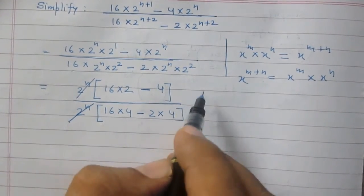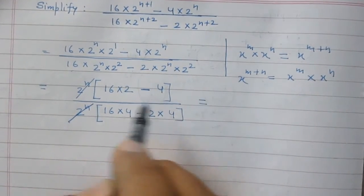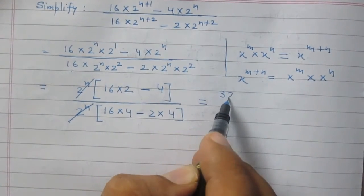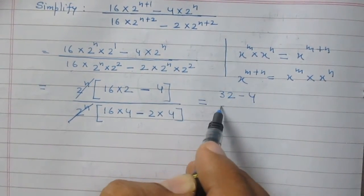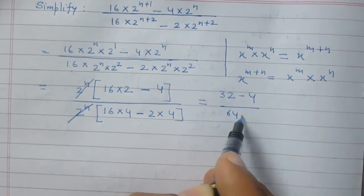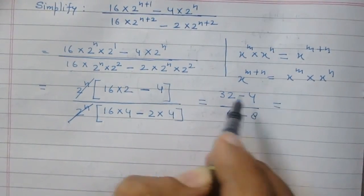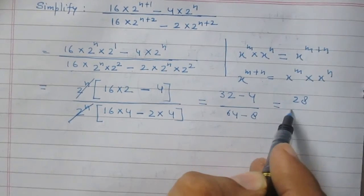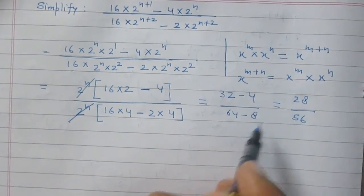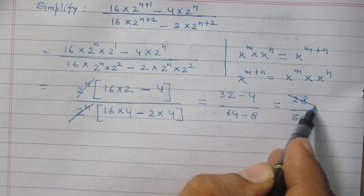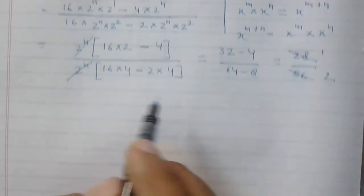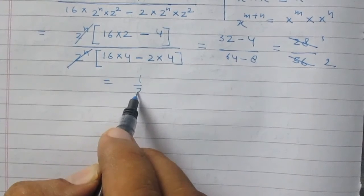In the numerator: 16 multiplied by 2 is 32, then minus 4, giving 28. In the denominator: 16 multiplied by 4 is 64, then minus 8, giving 56. We get 28 divided by 56, and the result is 1 upon 2.